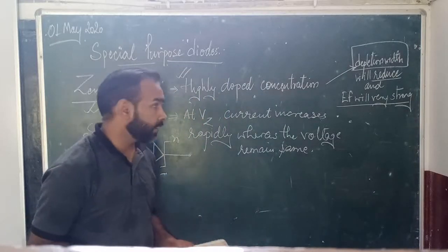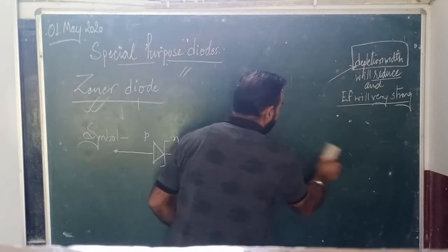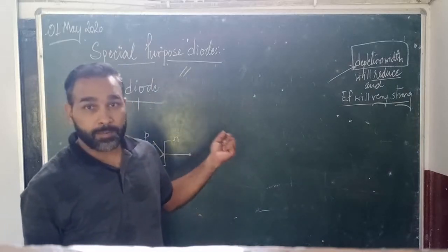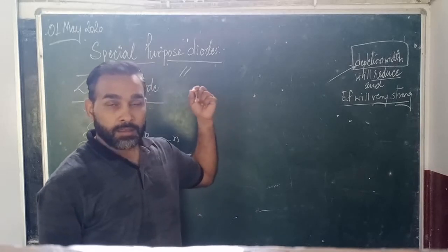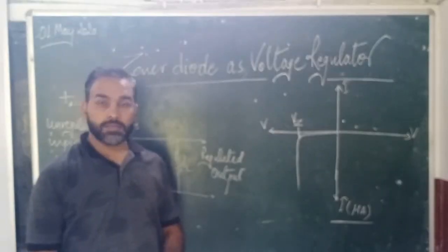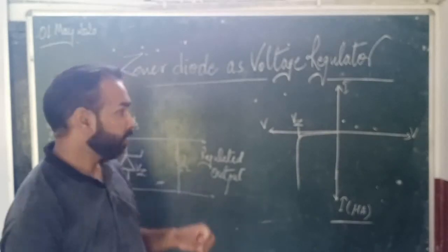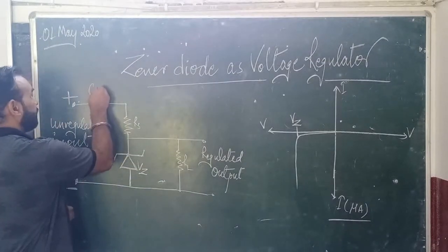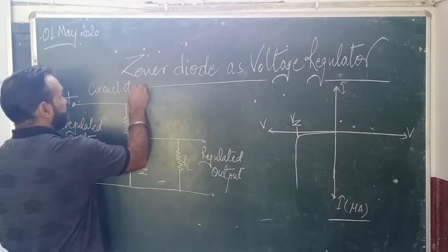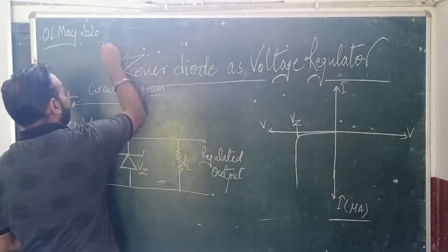Now I was talking about the voltage regulator — how the zener diode works as a voltage regulator. This is a very important topic. You must understand how it regulates the voltage. Remember the key point: at breakdown, the voltage remains the same while the current increases. Let us now discuss the zener diode as a voltage regulator. Here is a circuit diagram which I have drawn. This is a very important topic for your board examination and it comes for 3 marks.